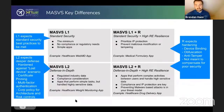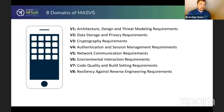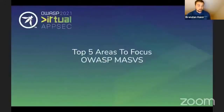The other side of the MASVS is its eight domains — these are more detailed requirements that security findings can be mapped to. The eight domains cover everything from architecture and design, data storage and privacy, cryptography, authentication, network communication, environmental interaction, code quality, and resiliency against reverse engineering. Next, we'll talk about the top five areas that NowSecure sees as problem areas where you can make the biggest impact on your mobile app security program as quickly as possible.